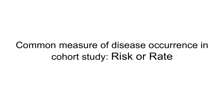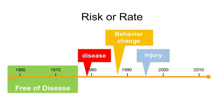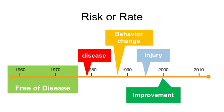A common measure of health outcome occurrence in a cohort study is a risk or a rate. Since cohort study subjects are free of the outcome at the outset, only new health outcome events — such as diseases, behavior changes, injuries, or improvement in health status — are considered. Note that some cohort studies of already-diseased persons have been conducted, such as persons with arthritis. In these cases, the outcome is not development of the disease but rather its consequences, such as development of heart disease or mortality differences between people with different types of arthritis. One could consider the disease type as the exposure.